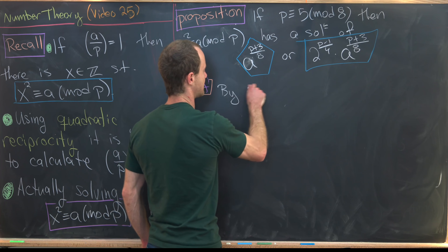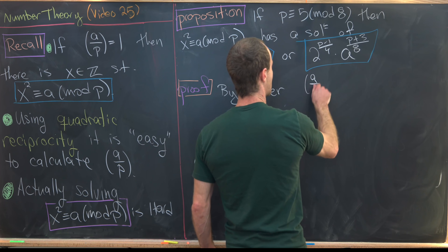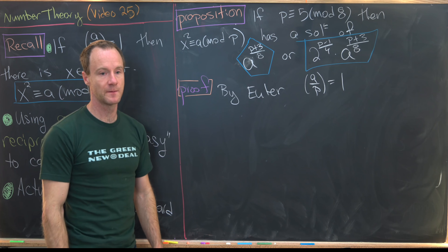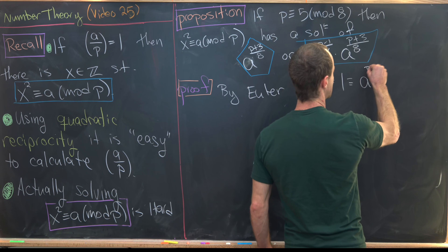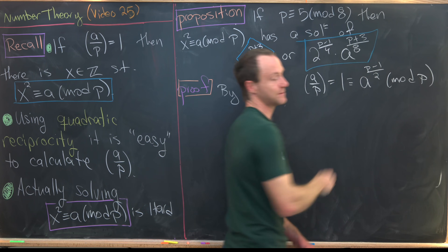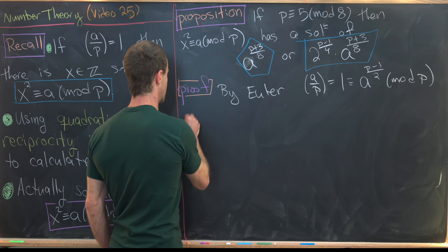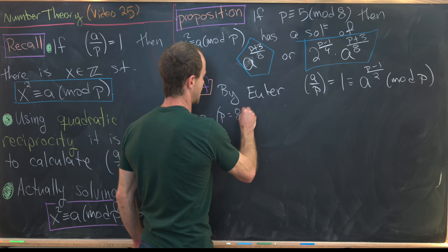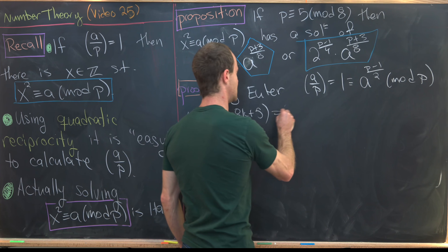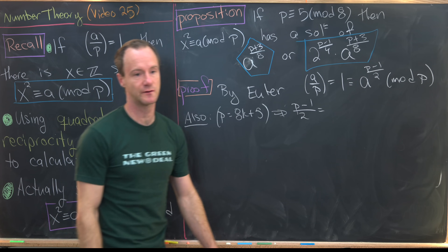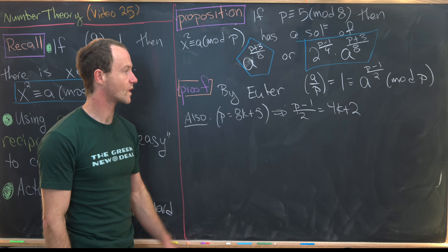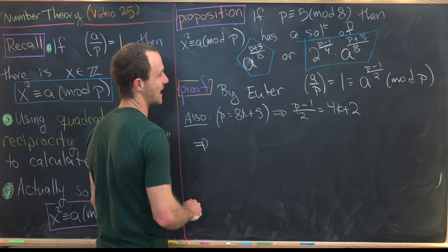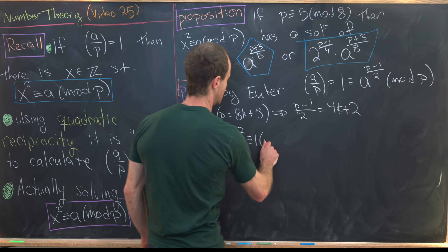We start the proof the same way as before with Euler's criterion. We know (a/p) = 1 since the congruence has a solution, and by Euler's criterion that is congruent to a^((p−1)/2) mod p. Since p = 8k+5, we get (p−1)/2 = 4k+2. So a^(4k+2) ≡ 1 mod p.